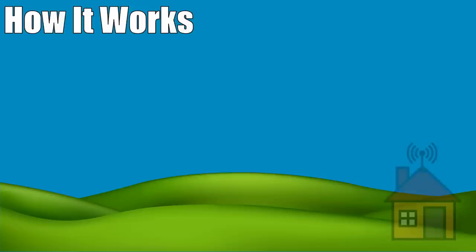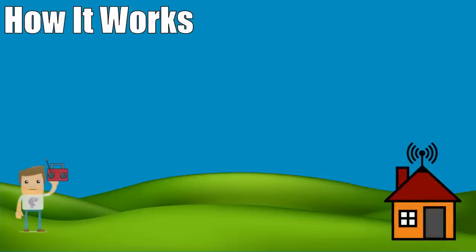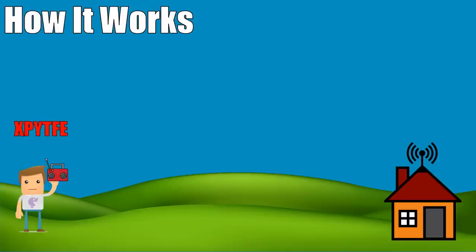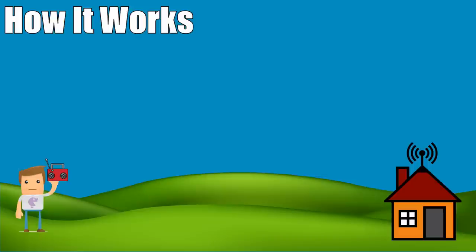How does it work? Let's say a spy station wants to send a message to their agents out in the field. They get their message, encrypt it using the one-time pad, then transmit it using a shortwave radio. The recipient turns on their shortwave radio, receives the message, decrypts it, and the communication is complete. This example is one-way communication, but the one-time pad is certainly capable of and frequently used in two-way communication.